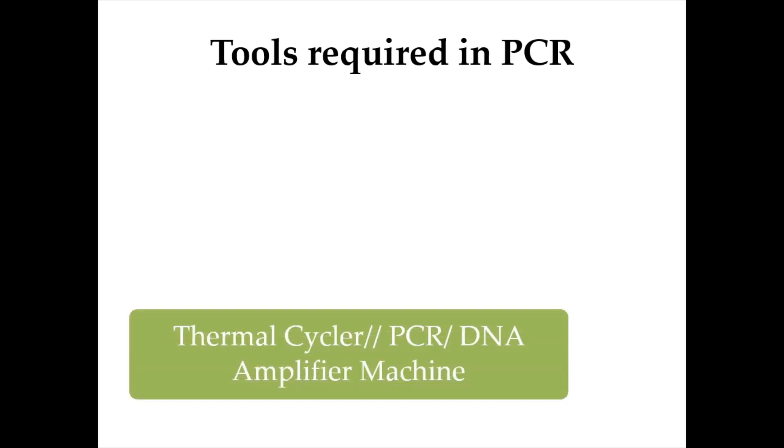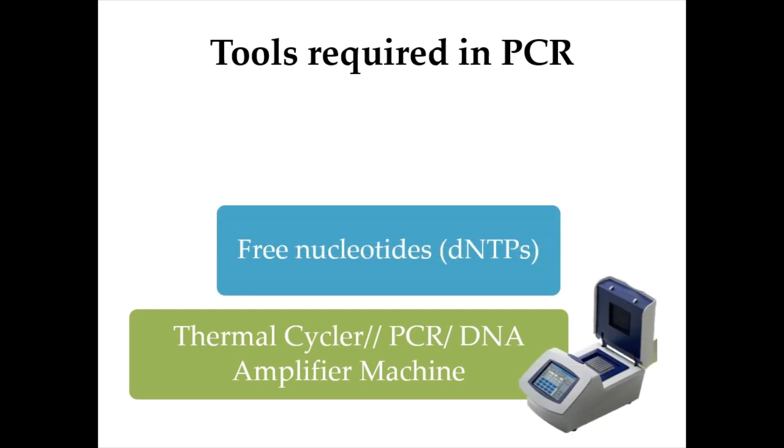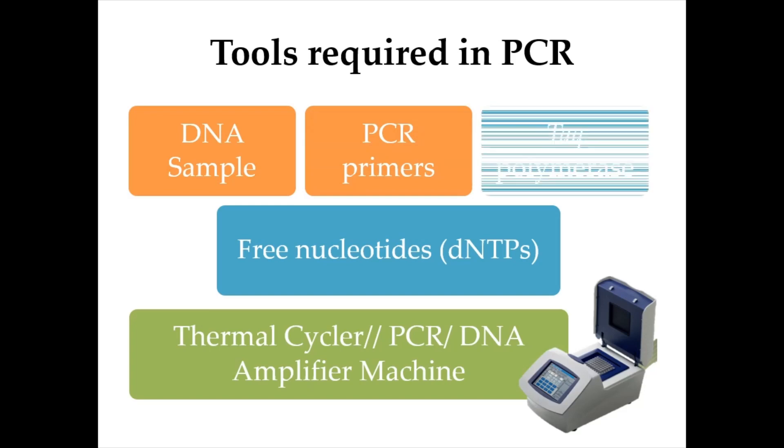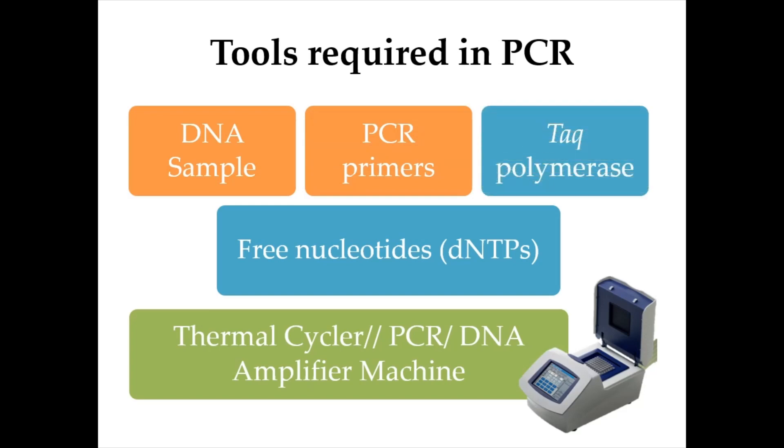For PCR, you need a thermocycler or PCR or DNA amplifier machine, free nucleotides or dNTPs, DNA sample, PCR primers, and DNA polymerase called Taq polymerase.